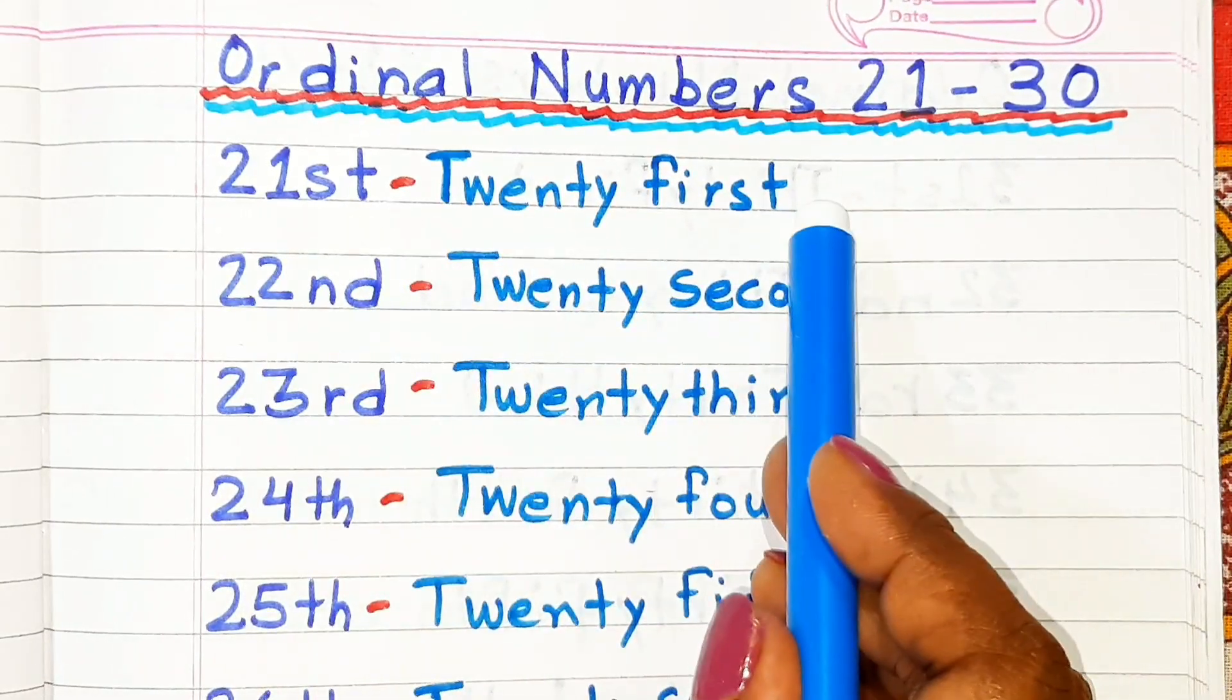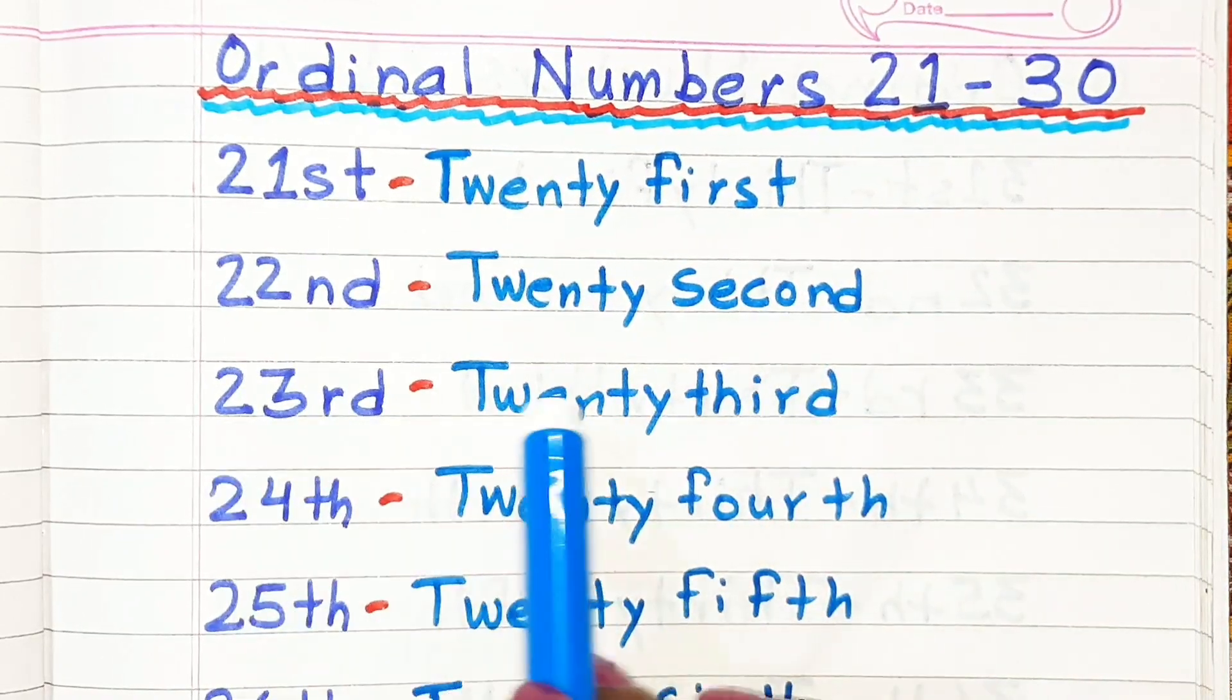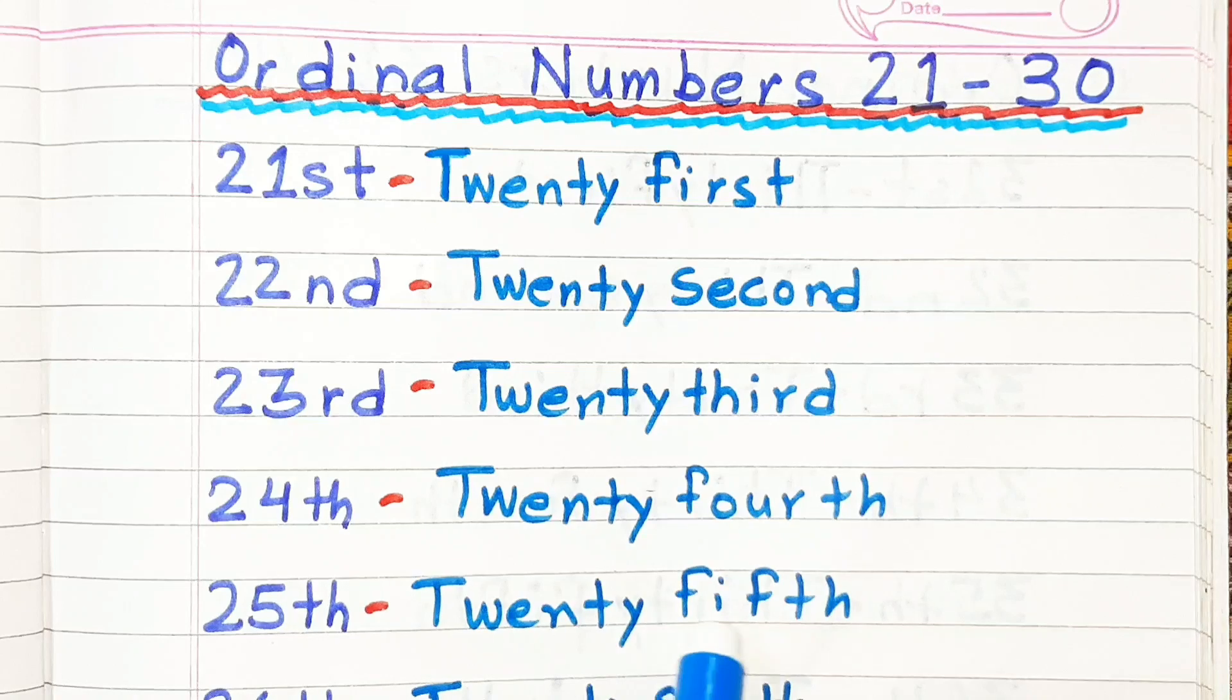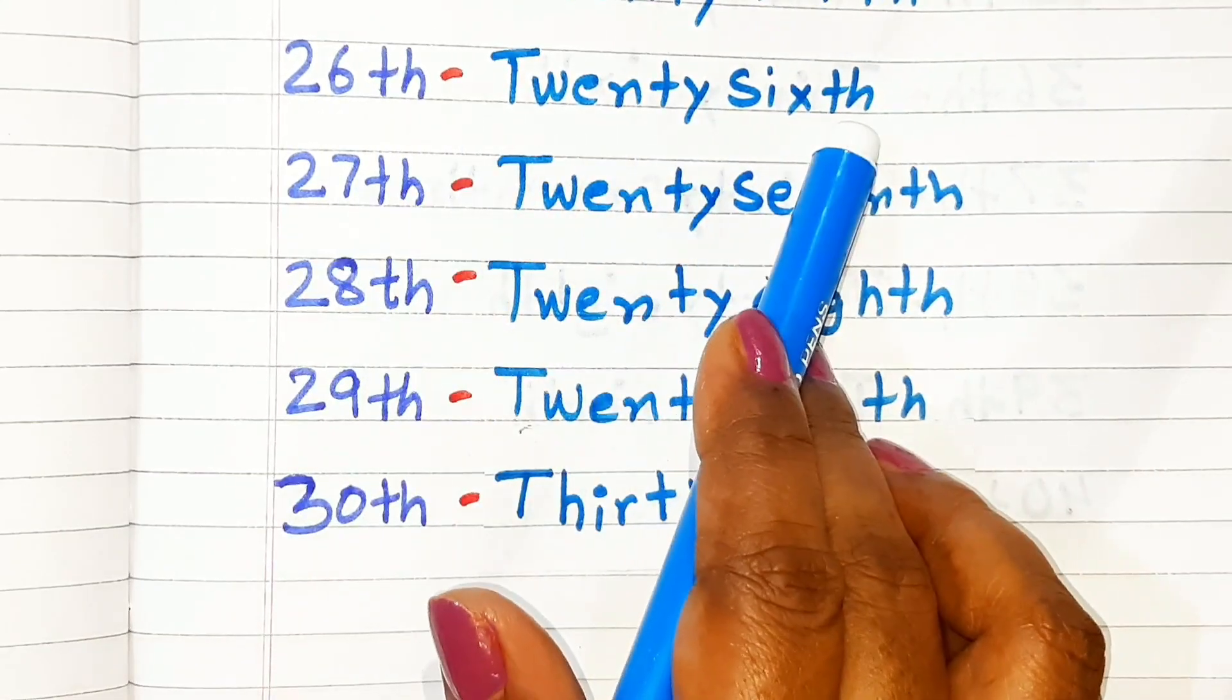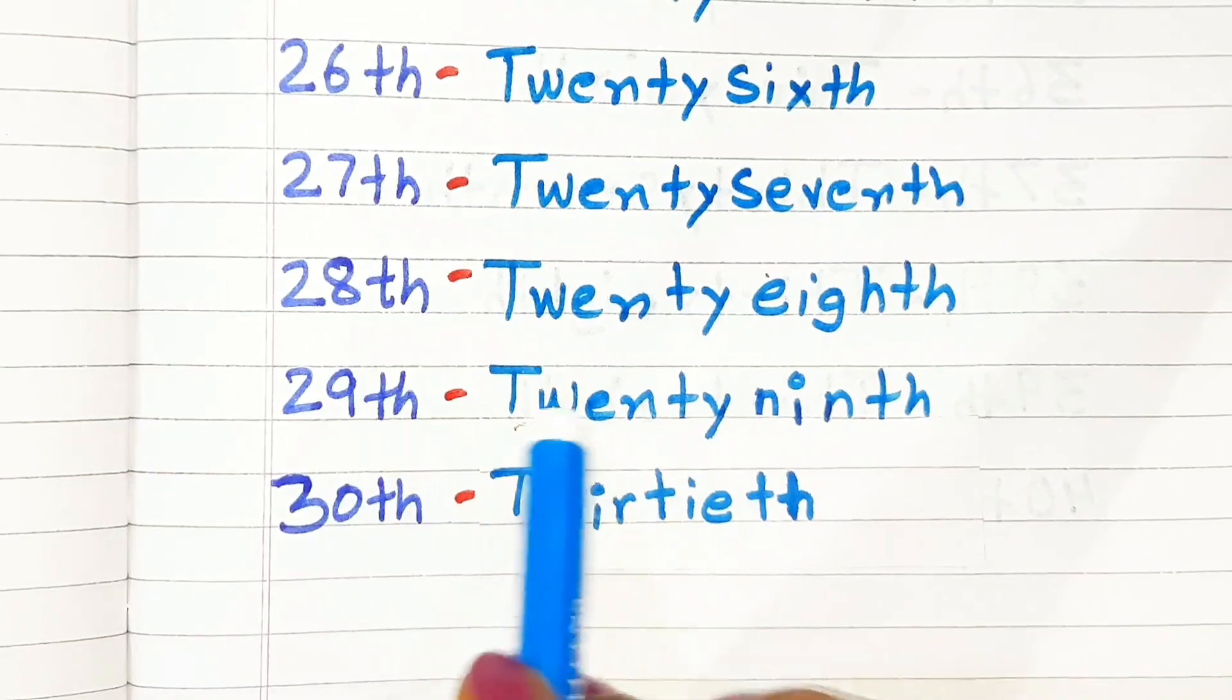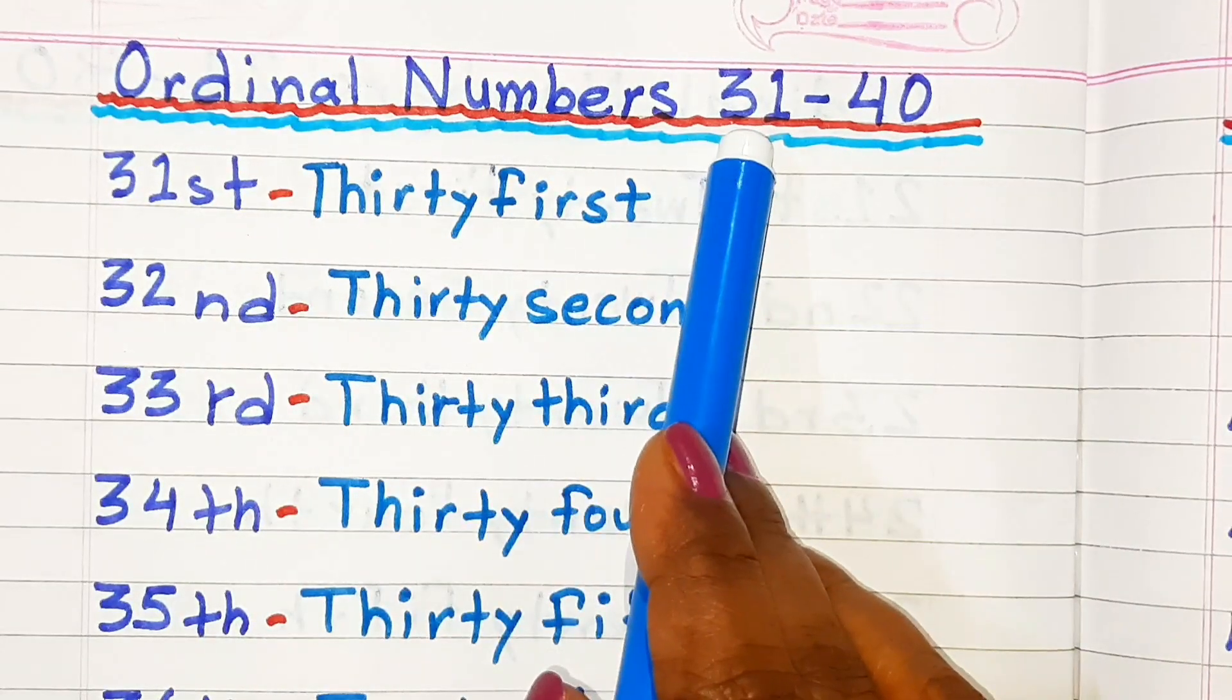Ordinal Numbers 21 to 30: 21st, 22nd, 23rd, 24th, 25th, 26th, 27th, 28th, 29th, 30th.